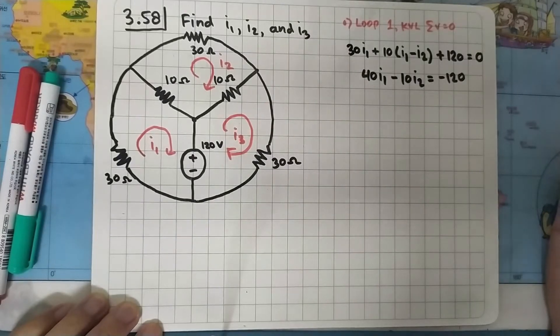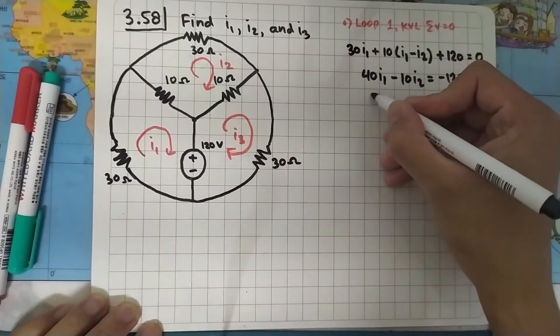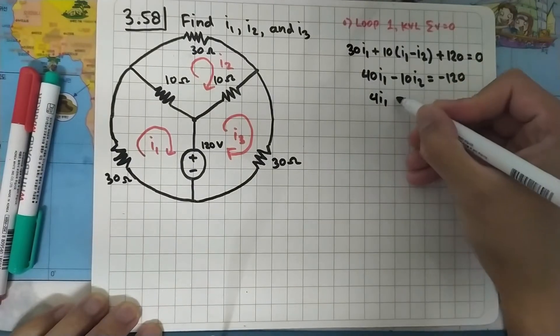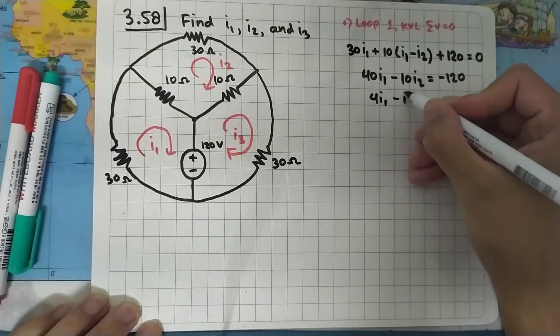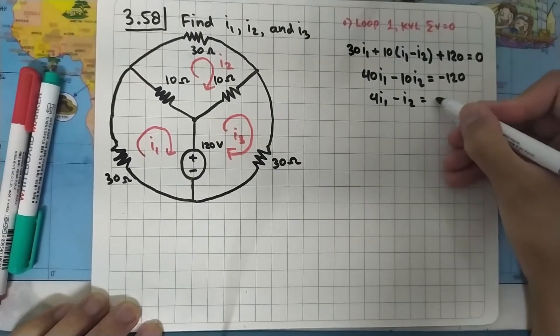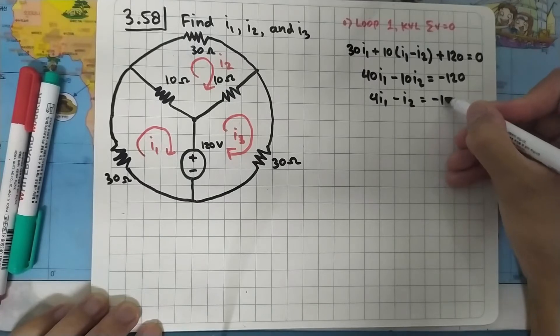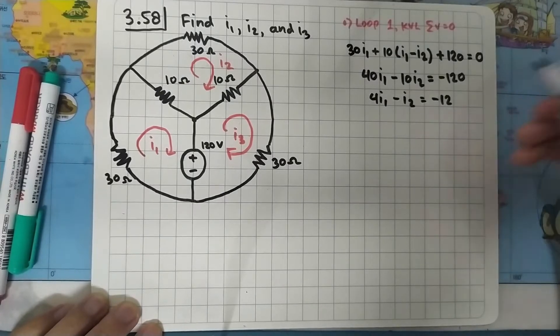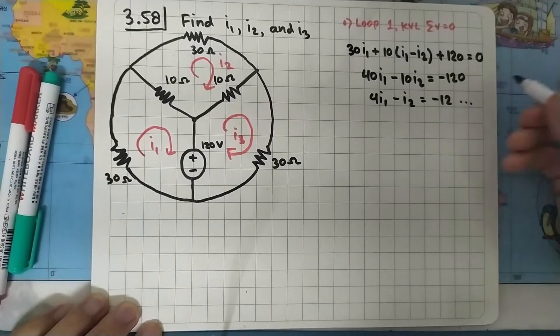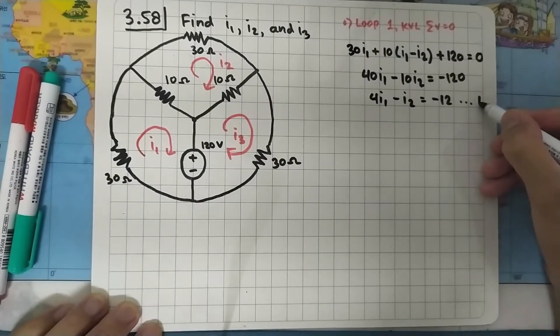We can simplify this as 40i1 minus 10i2 equals minus 120, or dividing both sides by 10: 4i1 minus i2 equals minus 12. Let's save this as equation number one.